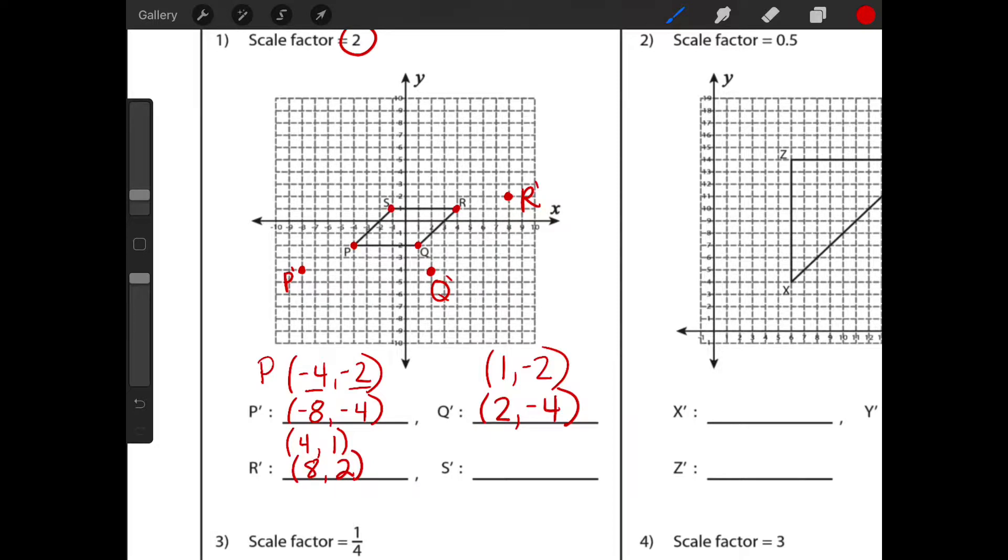And then we've got our last one, which is our S prime. So my original S is negative one, positive one. So two times negative one is negative two. One times two is two. So negative two, positive two. There is my S prime. Our final step now is to connect the dots. If I were you, I would use a straight edge for this, like a ruler, just to make it as neat as possible. I have a ruler on my iPad, so I'm going to do this as best as I can. And there we have our new image.